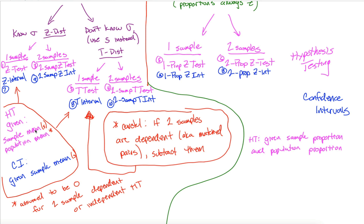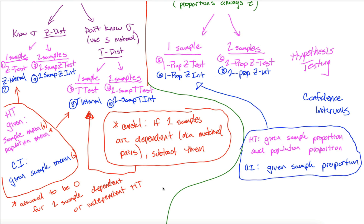For one sample proportions in hypothesis testing, you'll be given both a sample proportion and a population proportion — for example, knowing 33% of all dogs have fleas, and in your sample of 200 dogs from Washington 18% had fleas. With confidence intervals you won't be given a population proportion — that's what you're estimating. For two sample proportions, hypothesis testing assumes the population proportion difference is zero; with confidence intervals you're given two sample proportions.